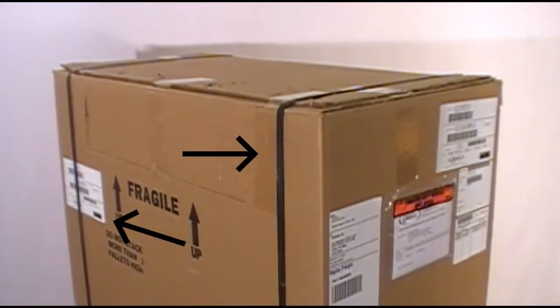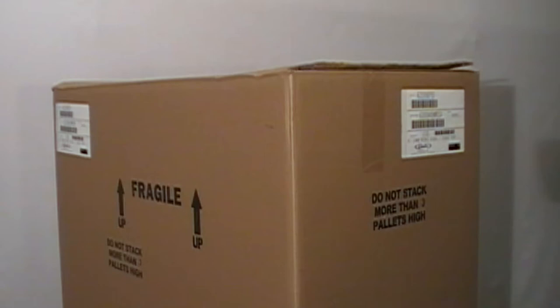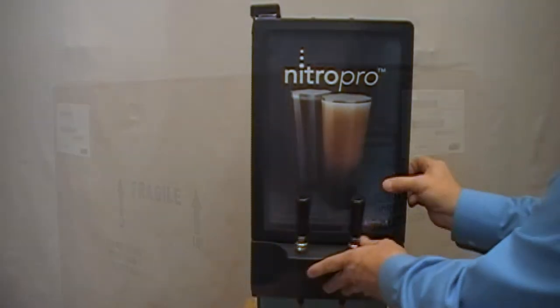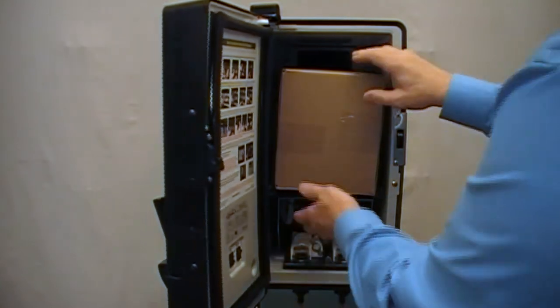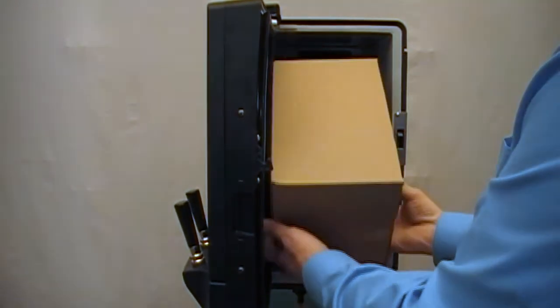Unbox the unit by first cutting the shipping straps and removing the shipping staples, then slide the carton up and off the unit. Next, remove the installation kit box from the inside of the unit's cabinet.